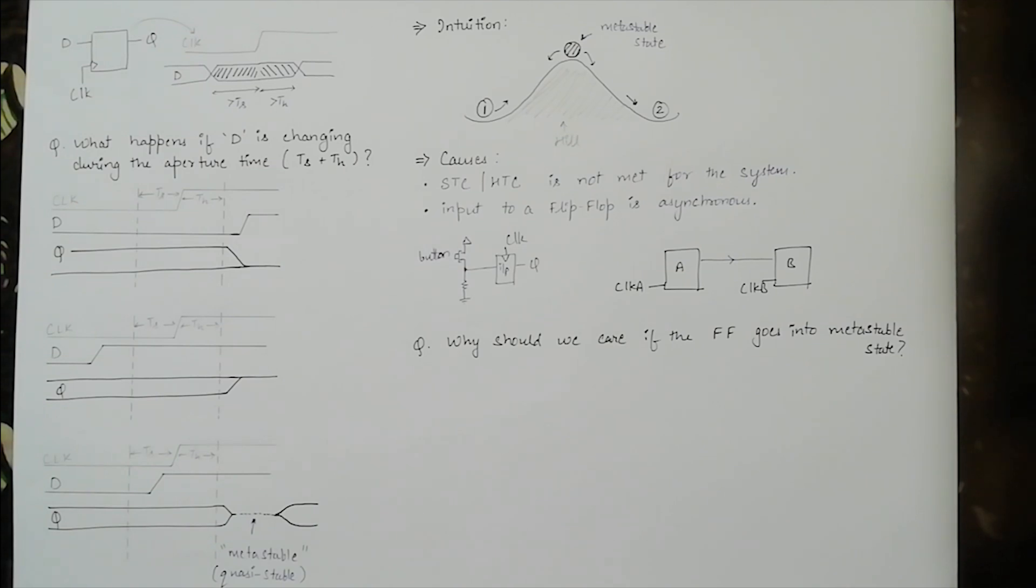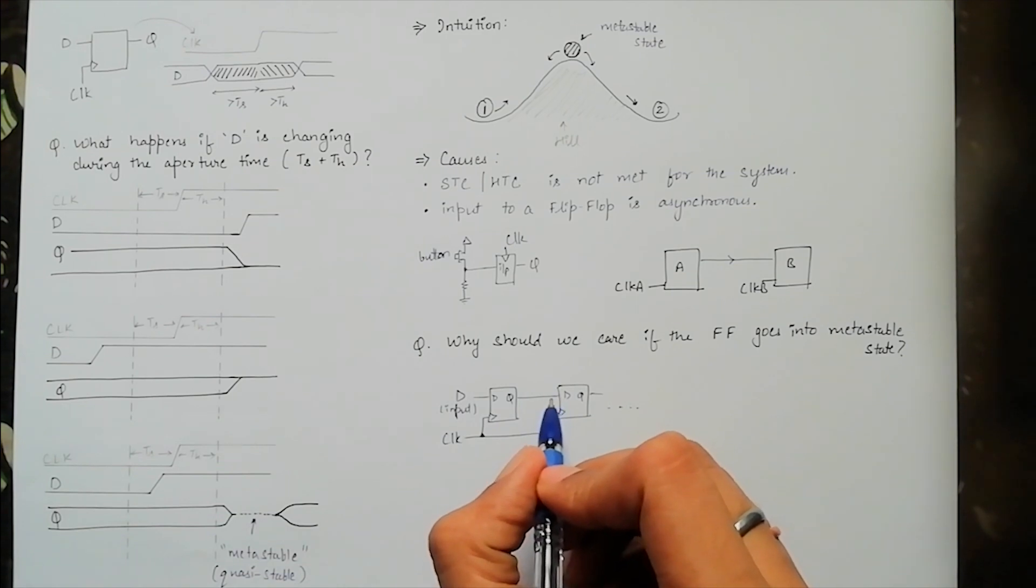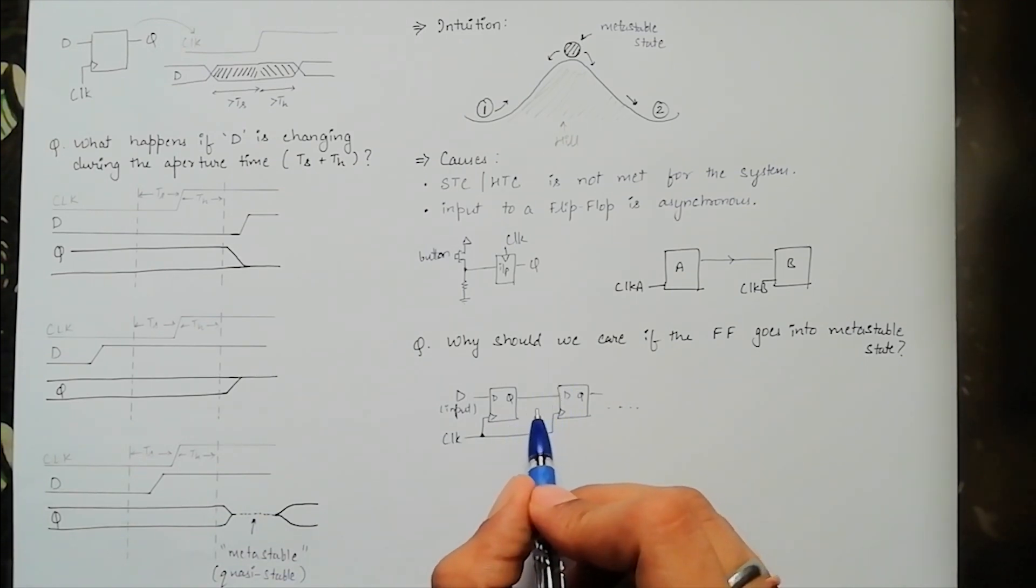We should care because once a flip-flop goes into a metastable state, the amount of time it takes to settle to one of the valid states is unknown. So if the data output resolves before the next flip-flop captures it, the system doesn't get impacted negatively.